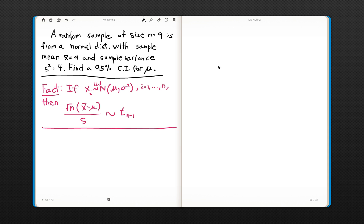We have a random sample of size 9 from a normal distribution, with a sample mean of x-bar equaling 9, and a sample variance, s-squared, equaling 4. And we'd like to find a 95% confidence interval for the population mean mu.